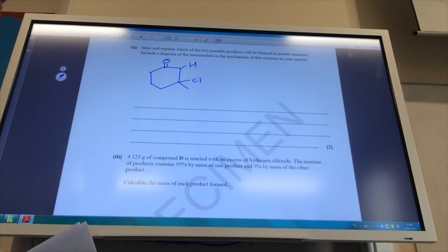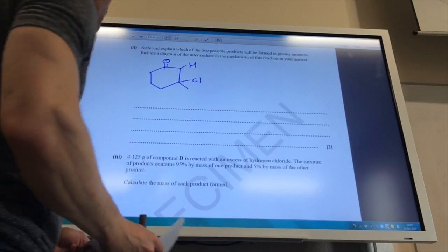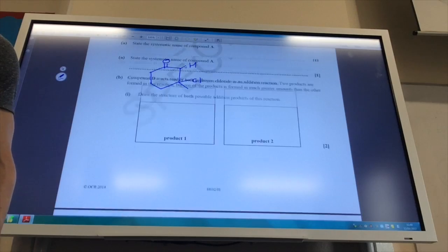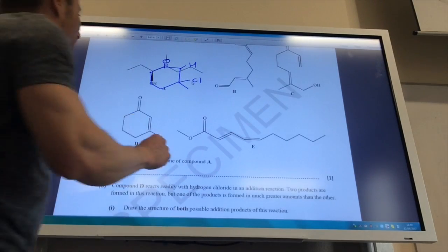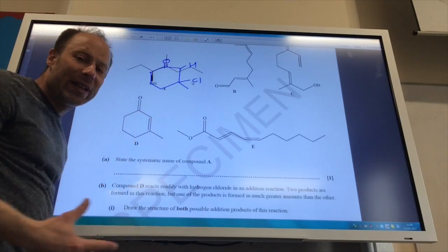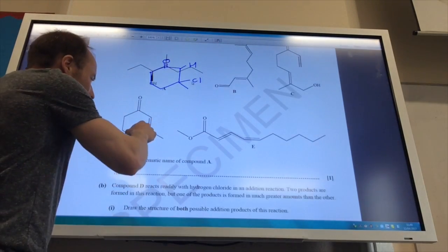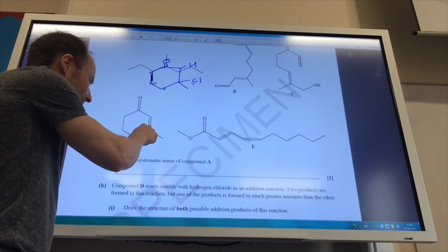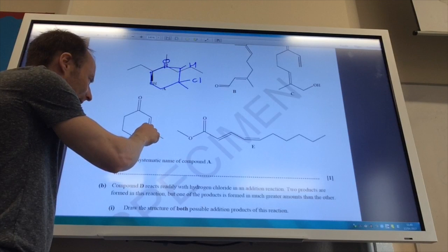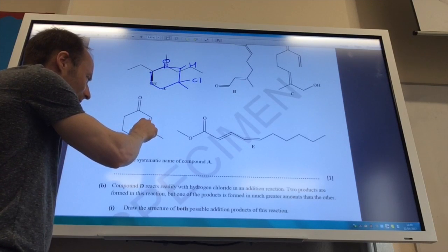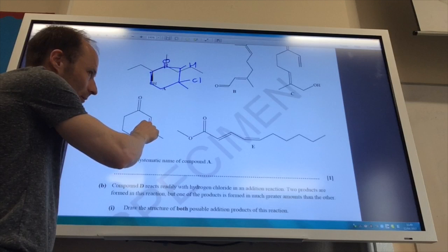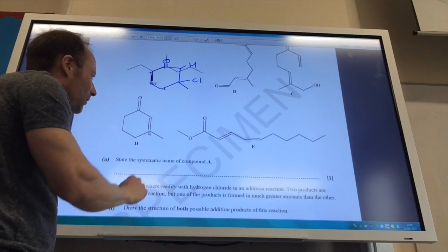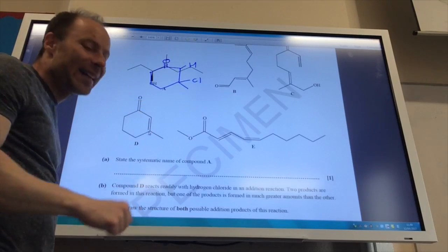Right, so it wants me to say which will be the greater product. Well, this one's going to be the greater product, because if we go back to the original structure, like so, remember the hydrogen adds to the carbon which already has the most hydrogen on. This carbon hasn't got any hydrogen on at all. This carbon is bonded by a double bond to that carbon there and a carbon there.